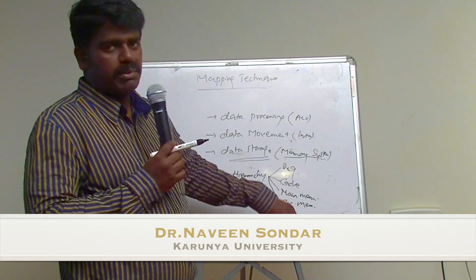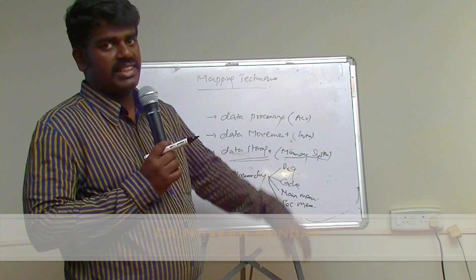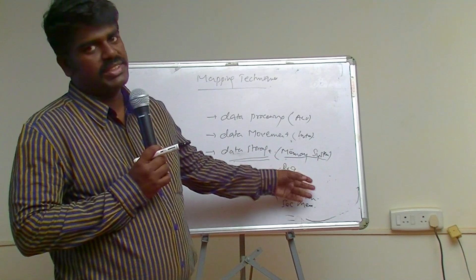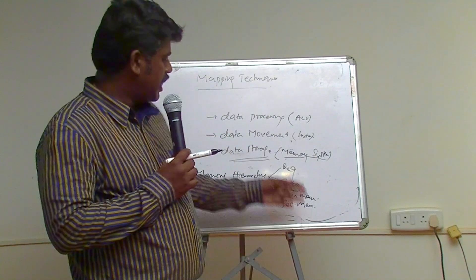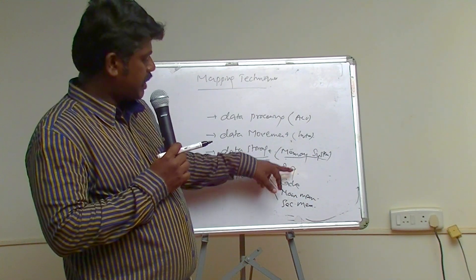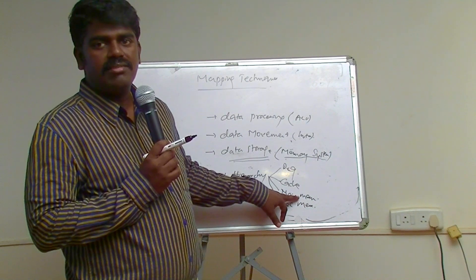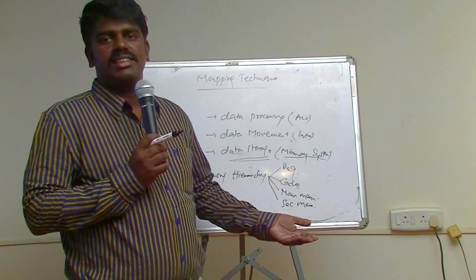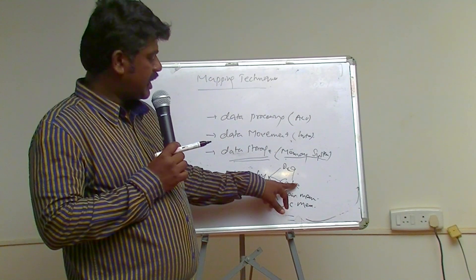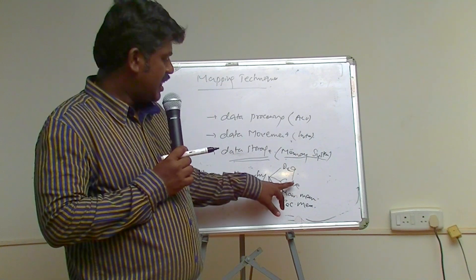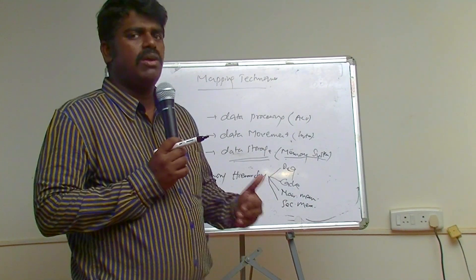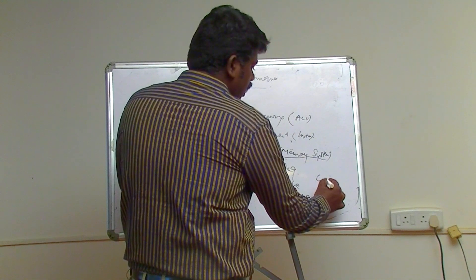We use this memory hierarchy because of size differences. The register size is small, so its access speed is fast, but the cost per bit is higher compared to cache, main memory, and secondary memory. The cache is bigger than the register but smaller than main memory, providing fast access. Main memory is bigger than cache, with a lower cost per bit than cache but smaller than secondary memory.